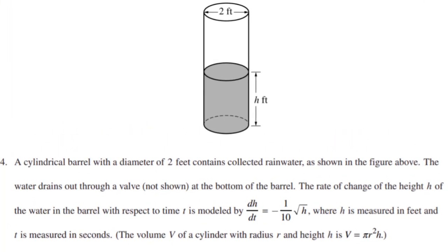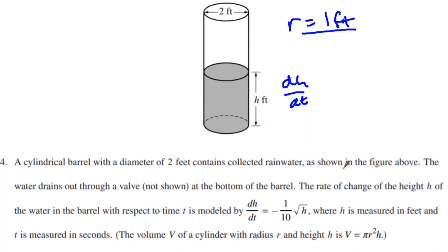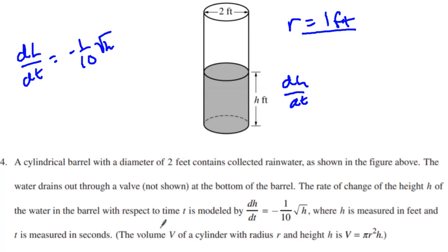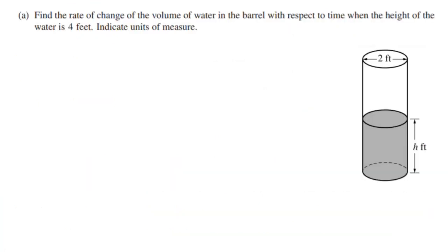We have a cylindrical barrel with a diameter of two feet. That diameter is not changing, so the radius of one foot is going to be a constant. But the height can change, so we can have dH/dT. The height can change because it contains collected rainwater, and the water is drained out of a valve at the bottom of the barrel. The rate of change of height with respect to time is modeled by dH/dT = -1/10 √h, where h is in feet and t is in seconds. Volume equals π r² h for a cylinder.